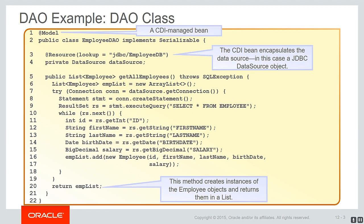The model is a CDI-managed bean. On line 3, the CDI bean encapsulates the data source. On line 20, this method creates instances of the Employee object and returns them in a list.